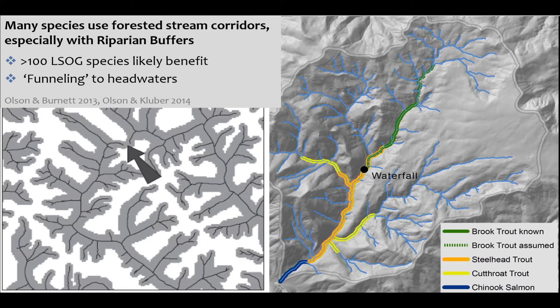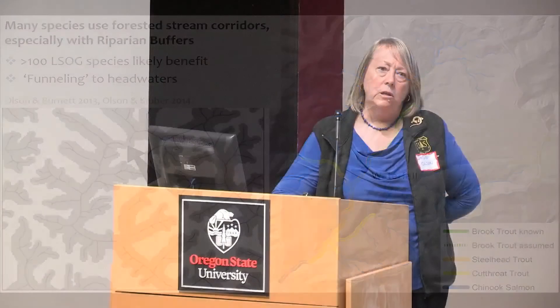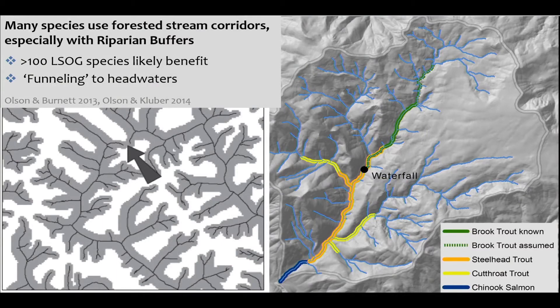Many species are associated with aquatic systems, and we learned about some fish aspects from Gordy. I'll be focusing more on the amphibians, but once the riparian reserves are out on the landscape they can provide incidental benefits for a host of taxa. An assessment of late successional and old growth species in the northwest forest came up with at least a hundred species thought to have incidental benefits from riparian reserves, including lichens, bryophytes, molluscs, through owls and retrievals. I'll talk mostly about amphibians, but these examples could apply to many species, especially low-mobility species.